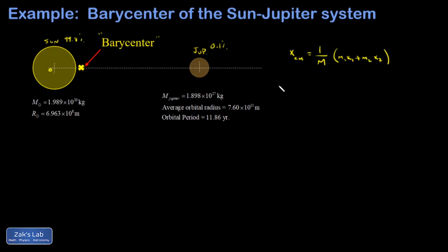And then it's just a matter of plugging in all these numbers in scientific notation. So total mass, 1.989 times 10 to the 30th kilograms for the Sun, plus 1.898 times 10 to the 27th kilograms for Jupiter.